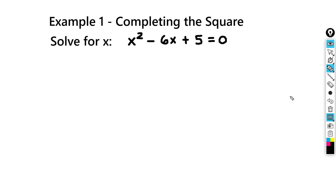In our first example of completing the square, we're going to solve for x. We have the quadratic equation x squared minus 6x plus 5. So if we look at the coefficient in front of x squared, even though it's not written, it's a 1. And like I said in the steps, we don't have to divide by 1 because everything would stay the same.